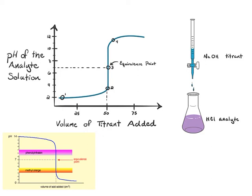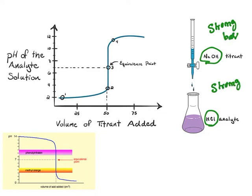Let us see the types of acid-base titrations. The titrant and the analyte are an acid and a base — that is why we call it acid-base titration. In a typical example, sodium hydroxide is a strong base and HCl is a strong acid — so this is a strong base versus strong acid titration. Here, the concentration of HCl is to be found out, so it is the analyte, whereas sodium hydroxide with known concentration is taken in the burette as the titrant.